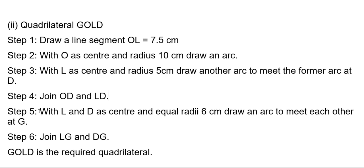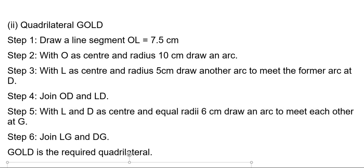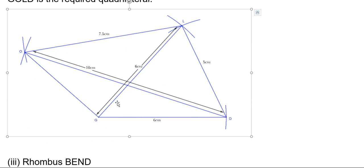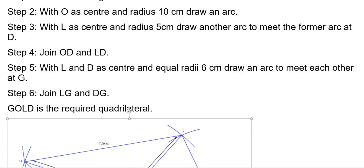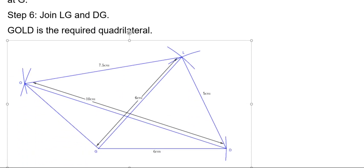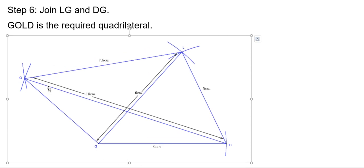Fifth step — with L and D as centers and equal radius of 6 centimeters, draw arcs to meet each other at G. From L, draw an arc of 6 centimeters, and from D, draw an arc of 6 centimeters; both meet at G. Join LG and DG, and also join OG. We will form quadrilateral GOLD. GOLD is the required quadrilateral.